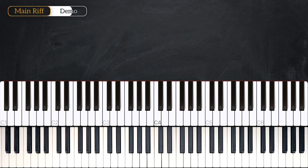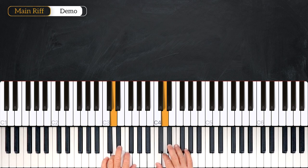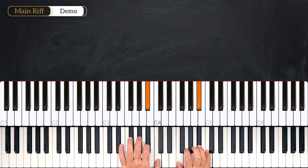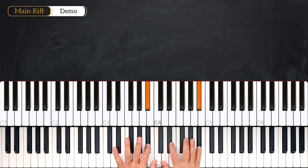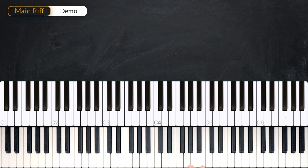Alright, so in this first part we are going to learn the main riff of the song. It's the pattern that we'll use for all the verses and the bridge. So we are in the key of C minor and we have B flat, E flat and A flat. Okay, so let's break down the chords that we'll use.